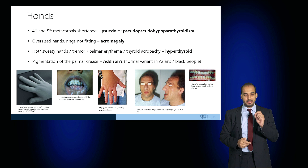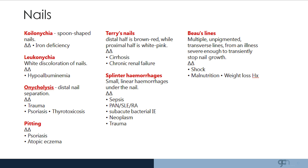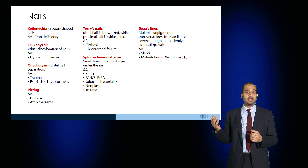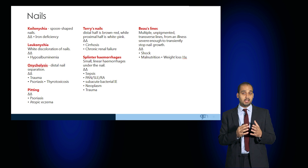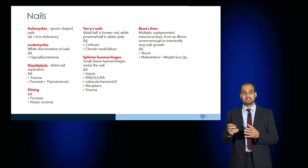In the hands, pay attention to the nails. Koilonychia would indicate iron deficiency — these are spoon-shaped nails. Leuconychia, white discoloration to the nails, can suggest hypoalbuminemia. Onycholysis, which is distal nail separation, can be traumatic or due to psoriasis, but also due to thyrotoxicosis. Pitting in the nails can be due to psoriasis or atopic eczema. Terry's nails, where patients have the distal half of nails a different colour to the proximal nails — proximally usually pale, distally usually dark — can be due to chronic renal disease or cirrhosis.